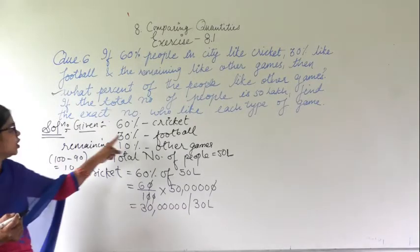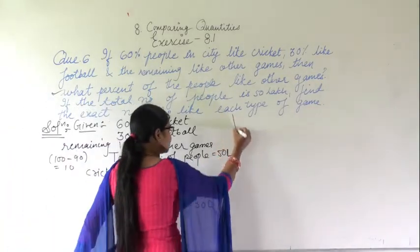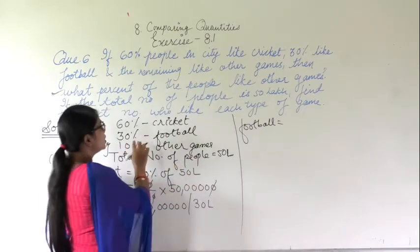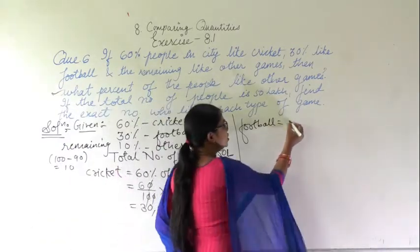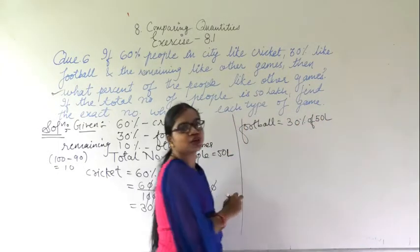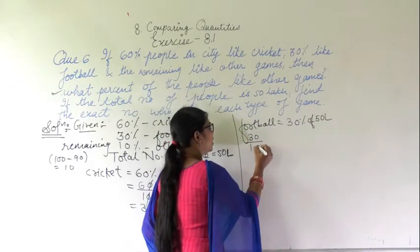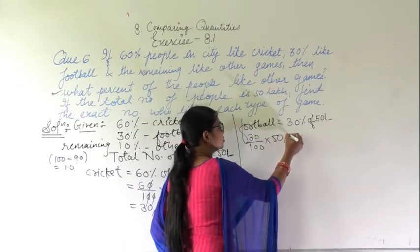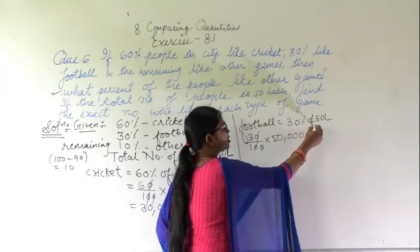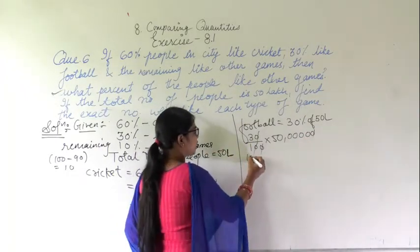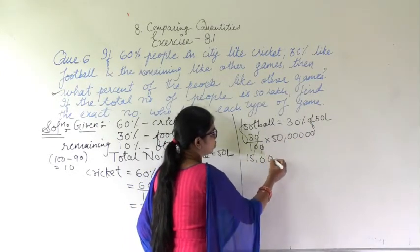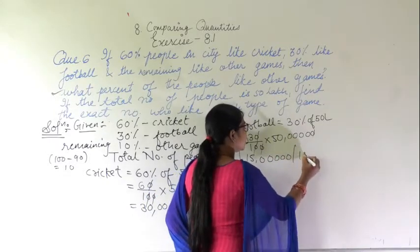Similarly for football: 30% of 50 lakh, that is 30 upon 100 into 50 lakh. After cancelling zeros, 5 times 3 is 15, giving 15 lakh. So 15 lakh people like football.